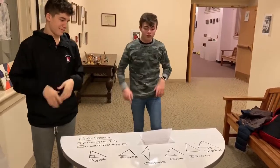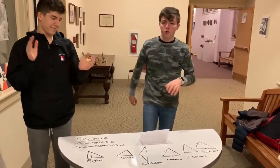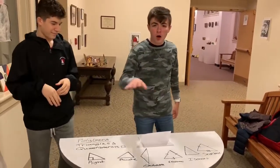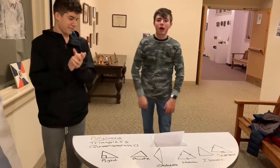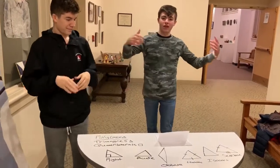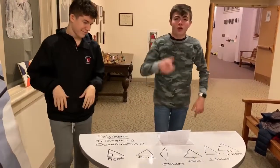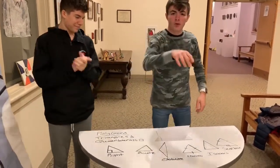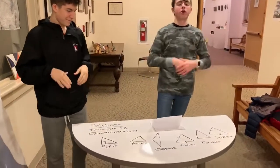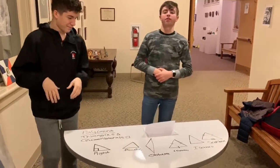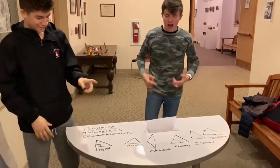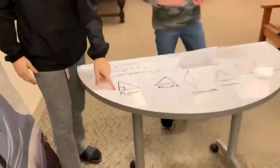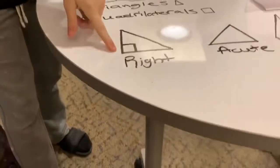Buddy, you're about to get schooled. It's all about the polygons that we're learning about. We've got triangles, quadrilaterals, and also other types of polygons. Let's start with right triangles.